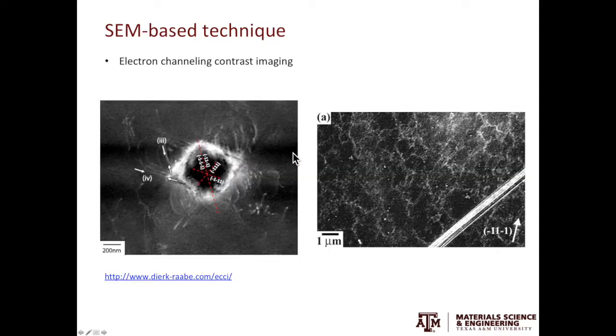You can also use SEM to reveal dislocation structures. The specific technique is called ECI, Electron Channeling Contrast Imaging. When you have dislocations in the material, dislocations will bend the lattice near the core. The bending of the lattice will influence how deep the electrons can travel into the materials before they back scatter. The examples in this slide were taken from Professor Dirk Raabe's website. Professor Dirk Raabe is the director of Max Planck Institute in Dusseldorf.